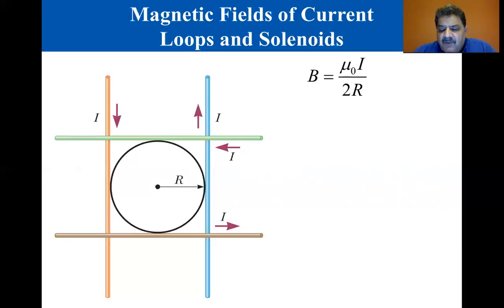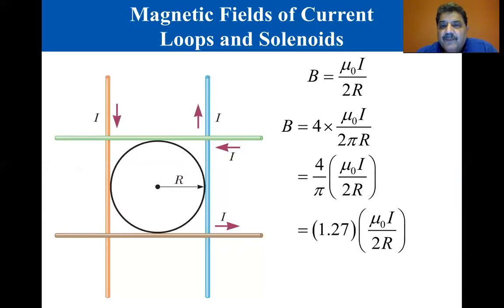Each wire contributes the same magnetic field at the exact center, so the total field is B equals four times mu zero I divided by two pi R, which is four divided by pi times mu zero I over two R, which comes out to be one point two seven. Notice that this result is approximately the same as the field produced by the circular loop of current. When the coil has N loops, each carrying current I, the magnetic field at the center is given by B equals N mu zero I over two R.